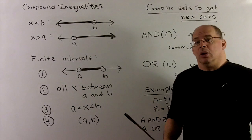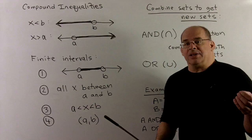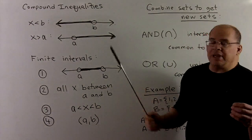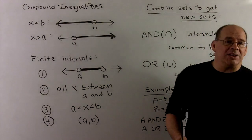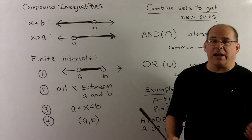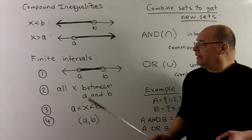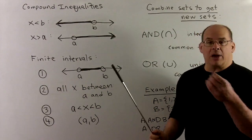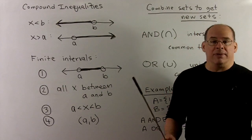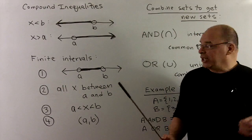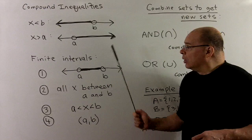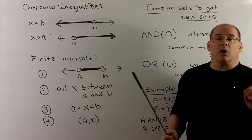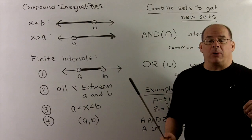Now the question is: with what we did from the last section, is there any way to get finite intervals — not going all the way off into either direction? Well, that's going to require some new operations.